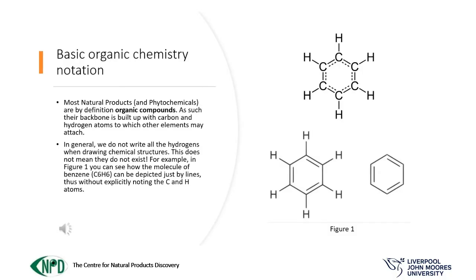Most natural products and phytochemicals are by definition organic compounds. Their backbone is built up with carbon and hydrogen atoms to which other elements may attach. In organic chemistry, we don't write all the hydrogens and carbons when drawing chemical structures, because these are by default the skeleton.